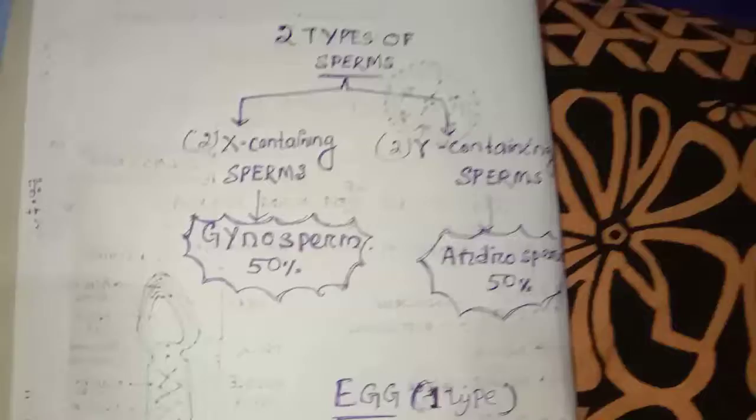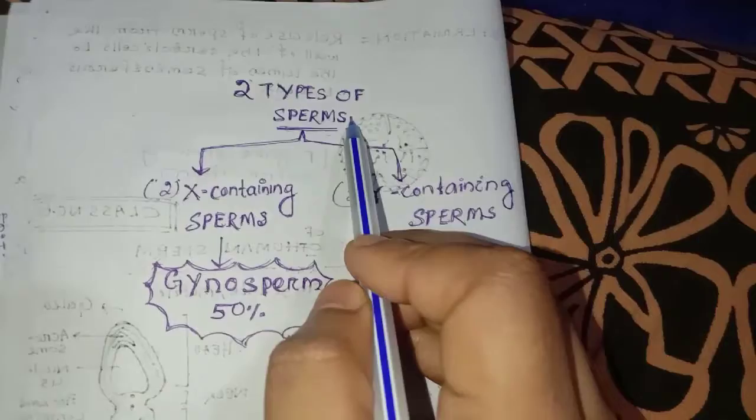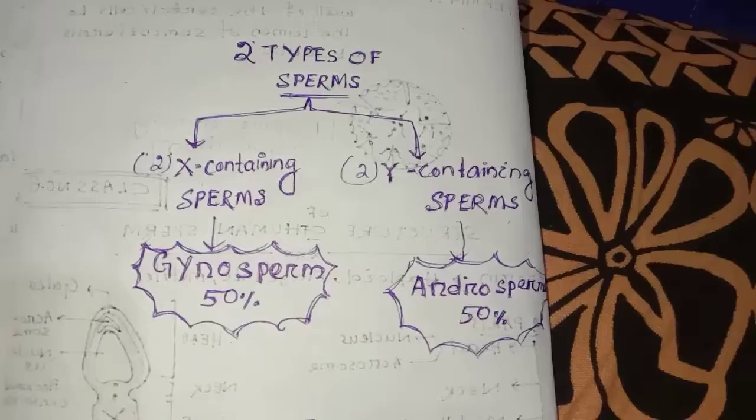The next topic is sperm production and sperm structure. There are X-chromosome-containing sperm and Y-chromosome-containing sperm. These are the two types used in sperm production.